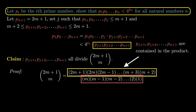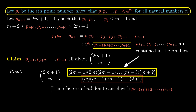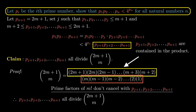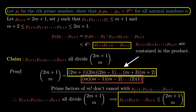The prime factors of m! do not cancel with any prime factor greater than m+1 in the numerator, which means the primes p_{j+1} to p_{n+1} will not be cancelled out when we reduce the fraction, as they are all greater than or equal to m+2. Hence, p_{j+1} · p_{j+2} · … · p_{n+1} must all divide C(2m+1, m). This gives us the bound: the product of those primes is less than or equal to C(2m+1, m).